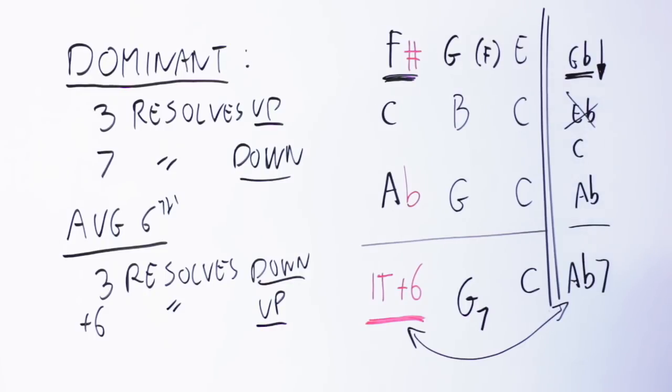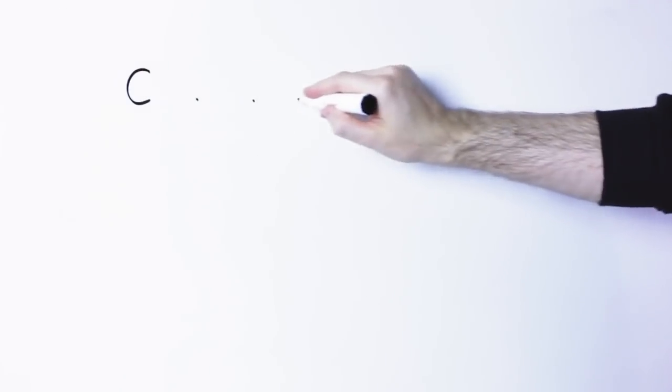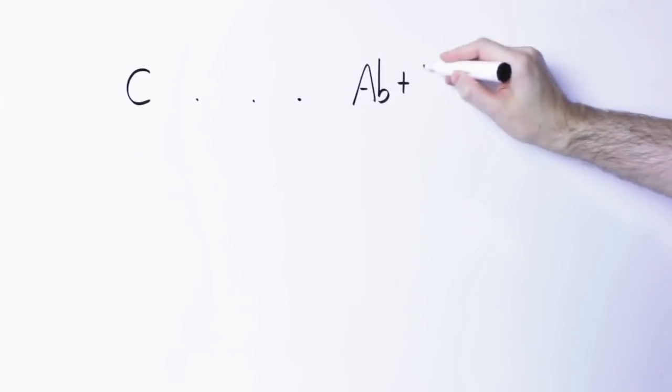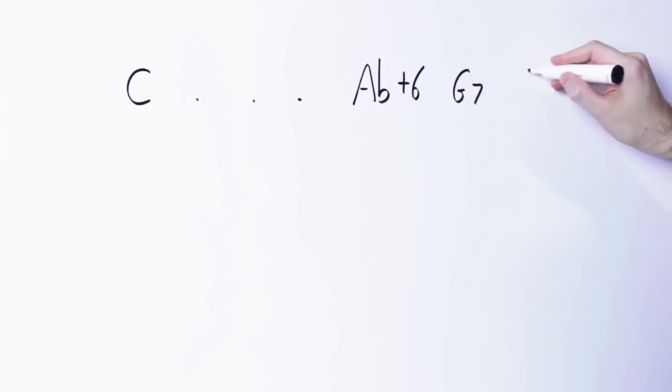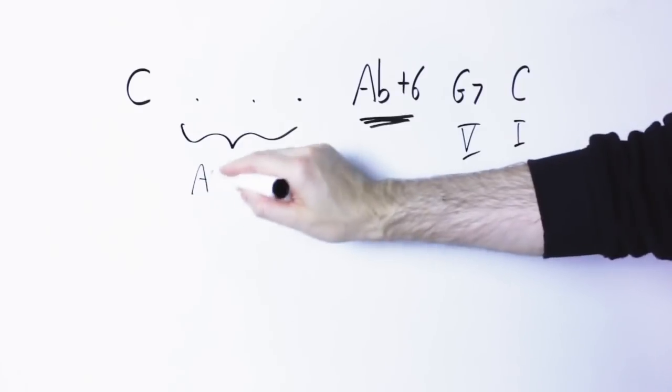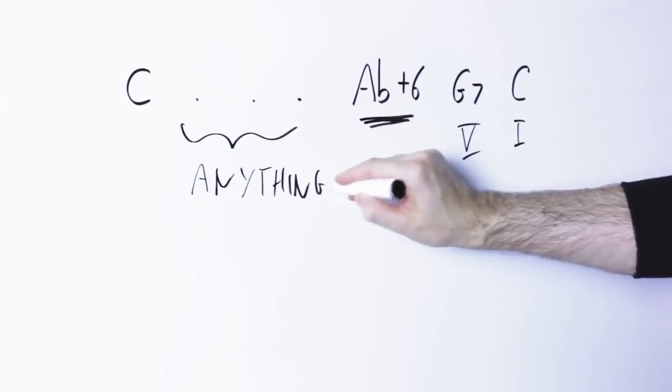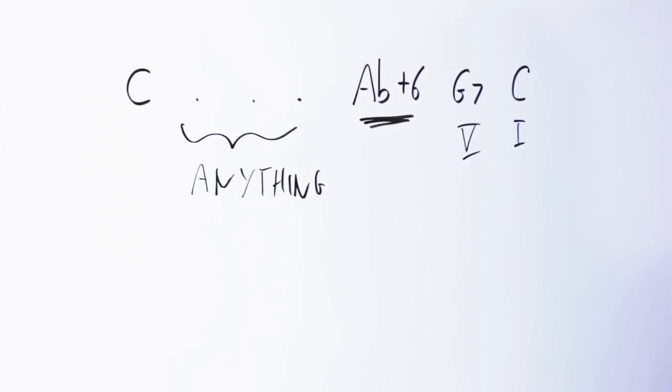So what you can do with that? Well, write a few chord progressions that end with a 5 to 1. So in C, write a few chord progressions that end with a G7 to C. And just before this G7, put this A flat augmented sixth chord. Before that, you can put literally whatever you want. You don't have to have the F slash A just before. Just try this, see if you like the sound, and that will be a simple application of the Italian augmented sixth.